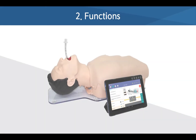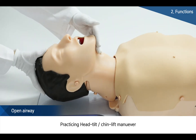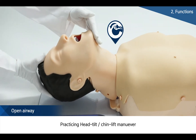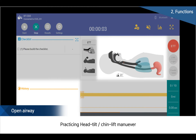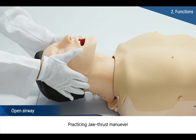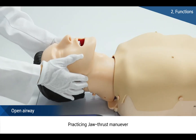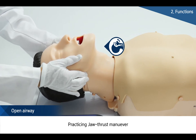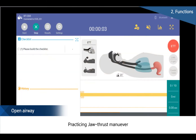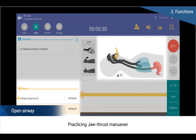Whereas simple models of the existing airway education products have been supplied, BT products can display feedback in real time through tablet PCs. While doing airway opening or jaw thrust maneuver, they can be checked through a screen and all of the log can be recorded and checked through history at the left lower end.